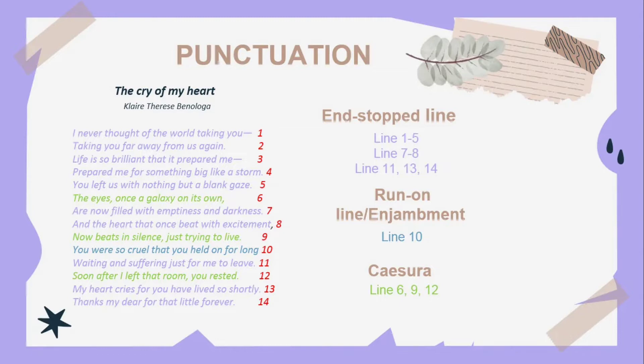For run-on line or enjambment, we have line 10: 'You are so cruel that you held on for long.' There is no punctuation there, so that is considered an enjambment. And for caesura, we have lines 6, 9, and 12. As you can see, the punctuation in line 6 is in the middle of the line — 'The eyes,' with a comma, 'once a galaxy on its own.' That is considered caesura.